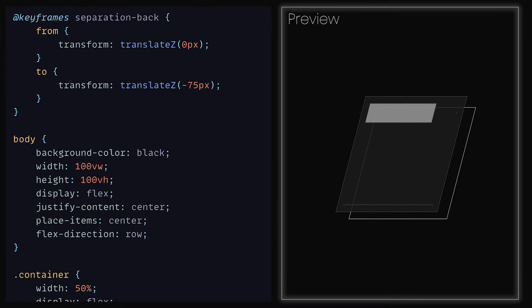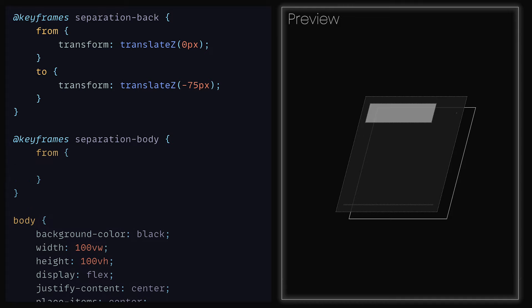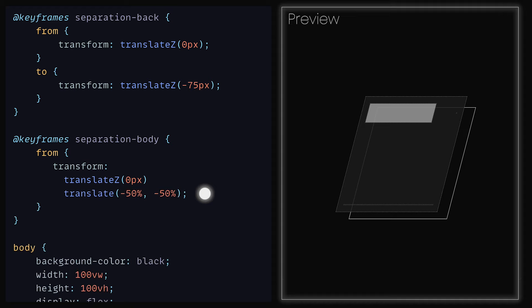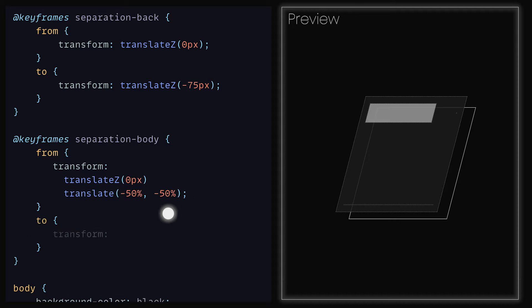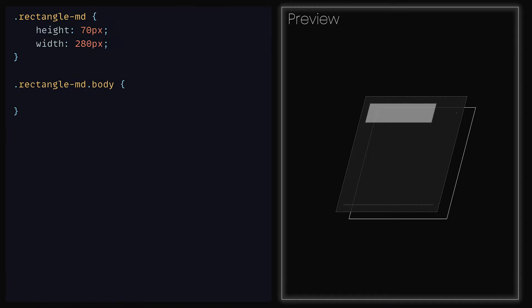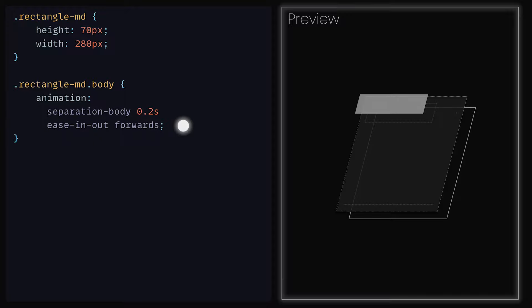Recalling the final result, the body of the rectangles pop out soon after the back separates from the front. This means we will need another set of keyframes that we can apply to the rectangles. At the top of the CSS file, where we have our other keyframes, we can create a new one called Separation Body. For the starting position, we can set the transform to be translateZ 0 pixels and another translate that will hold minus 50%, minus 50%. The reason we need that last translate is so that it doesn't override the translate we added to the body class. As for the to section, we can set transform to be translateZ 60 pixels and keep the same translate minus 50% function. Back down the file, we can add RectangleMD Body to have the animation SeparationBody, a duration of 0.2 seconds, ease in out and forwards. Then underneath, an animation delay set to 3.25 seconds.